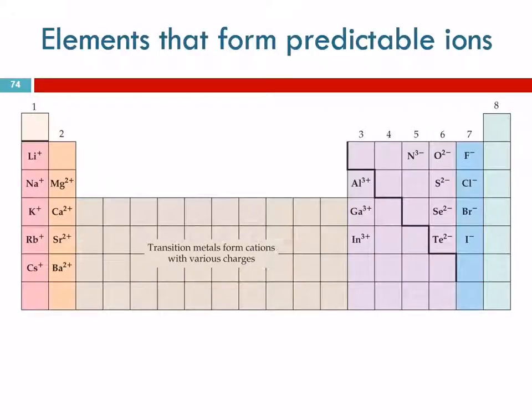The predictable ions that we see on the periodic table. Remember I told you about counting backwards to remember these? Zero, minus one, minus two, minus three. There's a reason for that. It's not just some weird thing that I figured out.